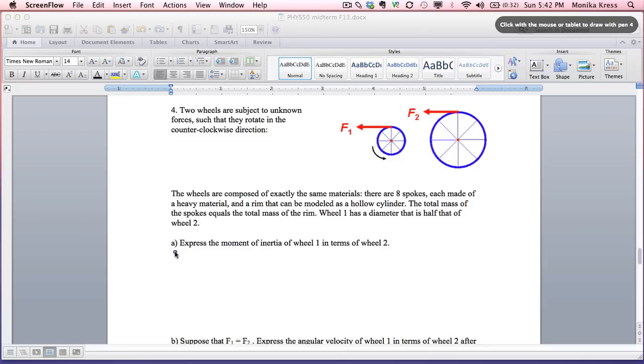I1 is going to be the moment of inertia of this hollow cylinder of mass m and radius r, mr squared. Then we have eight spokes. A spoke is a slender rod rotating with an axis around one end. The mass of any one of those is going to be one-eighth of the total mass m. We've got one-third mr squared, which is the moment of inertia for a slender rod with a rotation axis about one end.